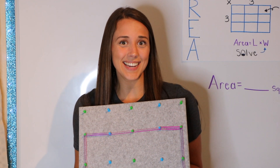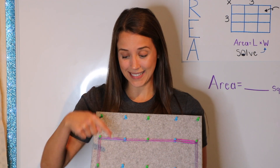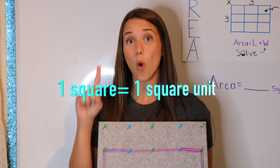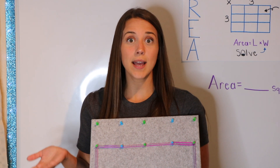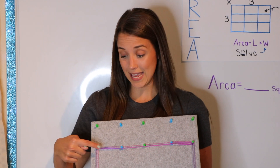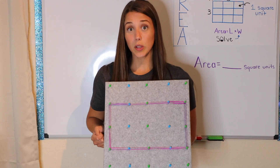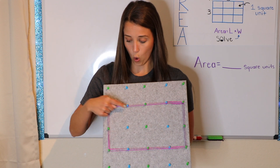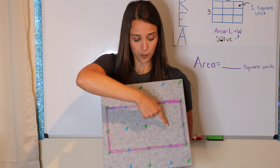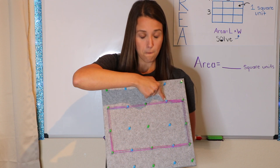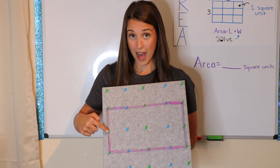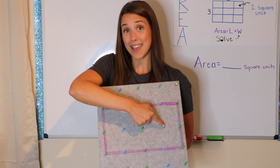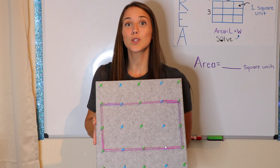So today, I'm bringing back my handy dandy geoboard. Now remember, area is the inside of an object. One square on my geoboard represents one square unit. We know that area is length times width, but today we're just going to be counting the inside square units of my rectangle. So let's count together: one, two, three, four, five, six, seven, eight. So the area of my rectangle is eight square units.